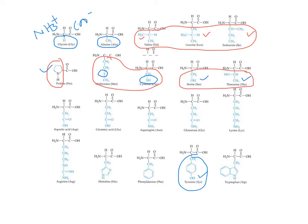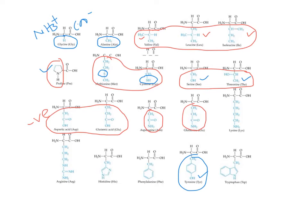Aspartic acid and glutamic acid exist as aspartate and glutamate in their deprotonated forms. Both have an acidic carboxylic group in their side chain that undergoes deprotonation at physiological pH 7.4, carrying a net negative charge — so aspartate and glutamate are referred to as negatively charged amino acids. Asparagine and glutamine are polar but carry no net charge under physiological pH, so they are referred to as neutral polar amino acids.